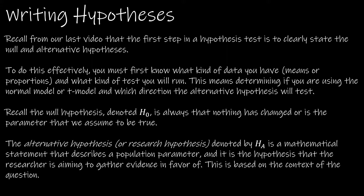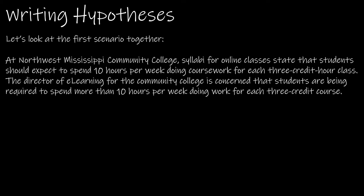Do we have means? If we have means, do we know sigma or do we not know sigma? If we don't have means, then we must have proportions. That will determine if we're using the normal model or the T model, and which direction the alternative hypothesis will go. The null hypothesis is always denoted H sub zero, and it's always that nothing has changed. The alternative hypothesis is denoted H sub A, and it's always going to be based on the context of the question.